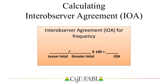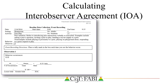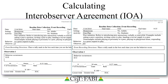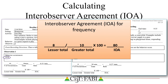Inter-observer agreement for frequency recording, for example, can be calculated by dividing the lesser total by the greater total and multiplying by 100. In this example, we see two observers record frequency of peer initiations in a 30-minute observation window. The primary observer recorded 10 instances, equating to a peer initiation rate of .33 times per minute, whereas the secondary observer recorded eight instances at a rate of .27 per minute. Dividing the lesser total 8 by the greater total 10 and multiplying by 100 gives us an 80% inter-observer agreement.